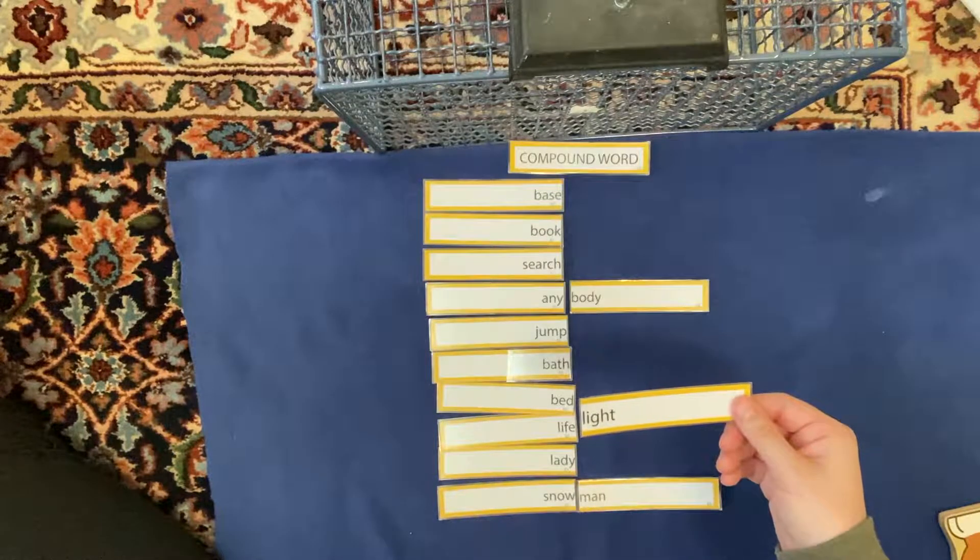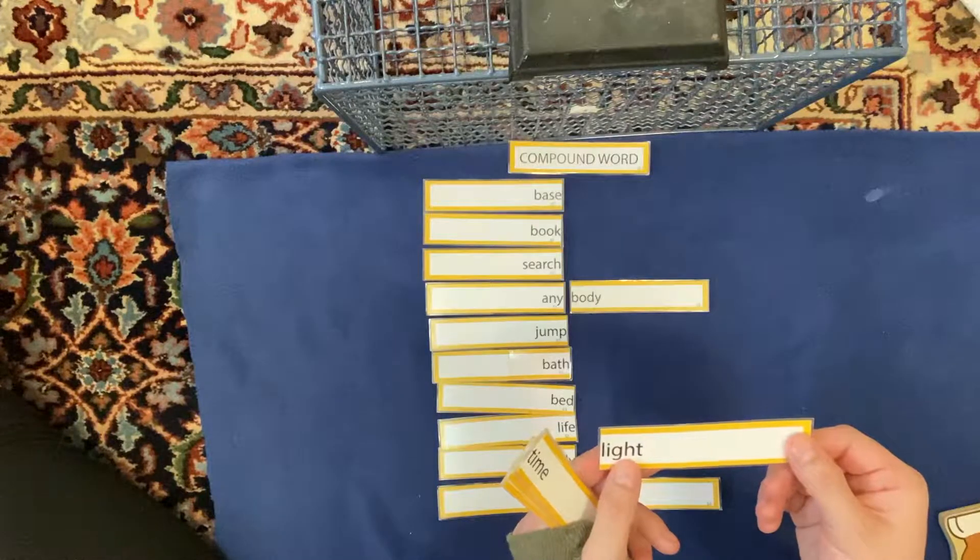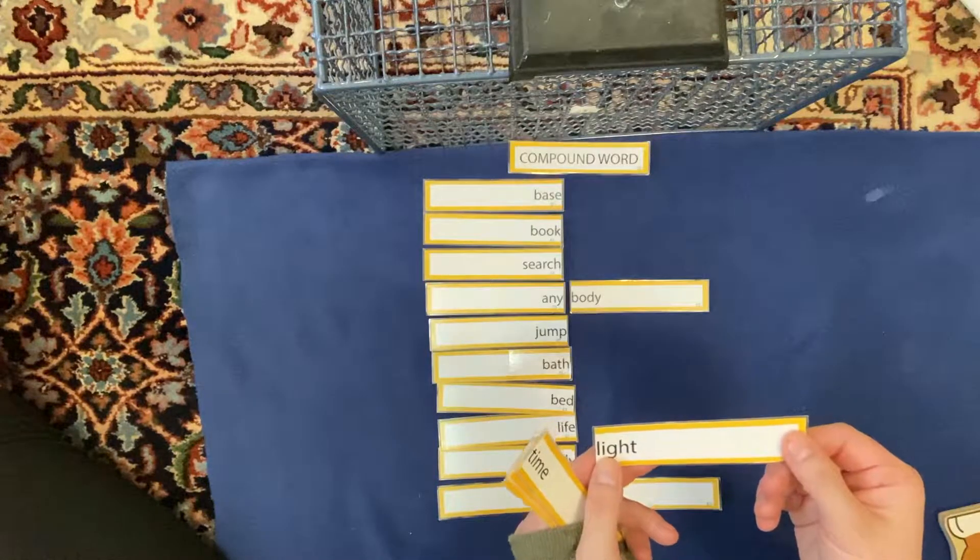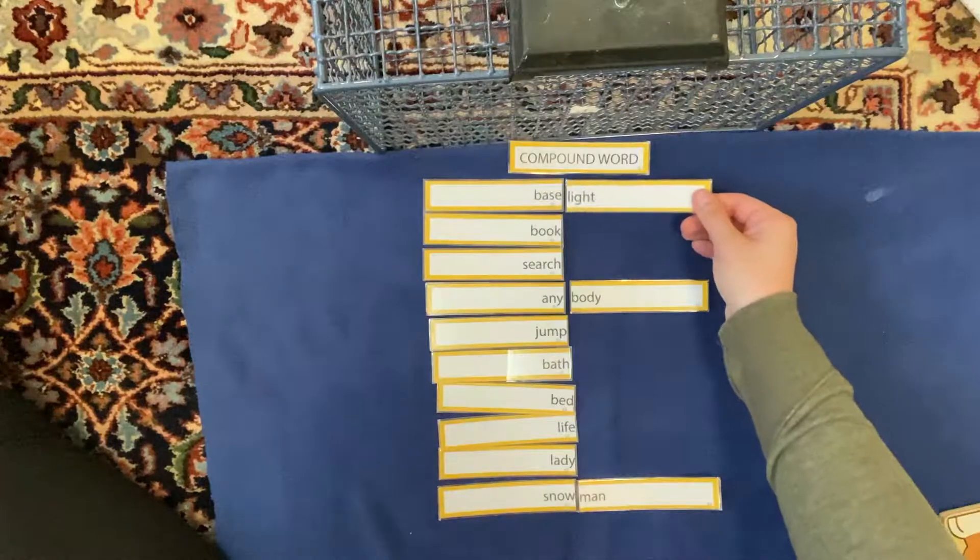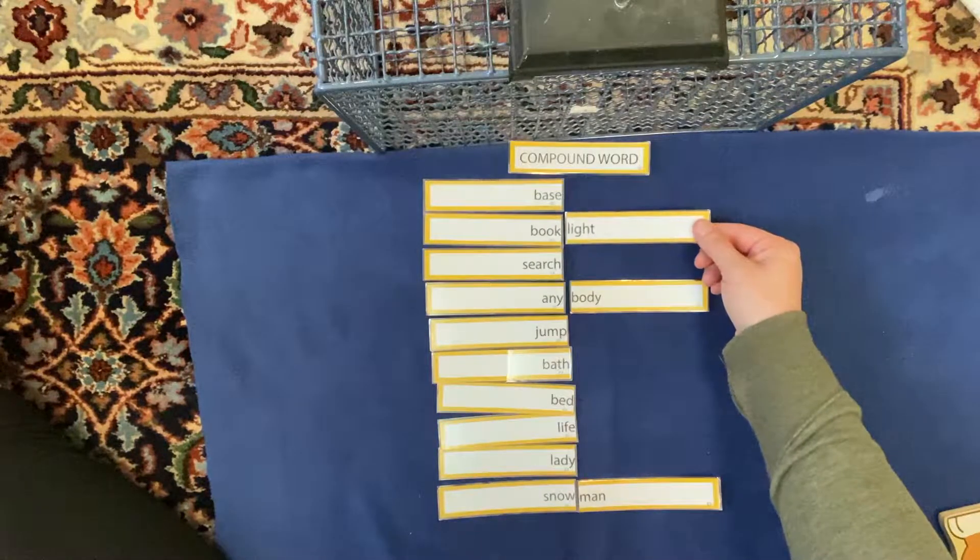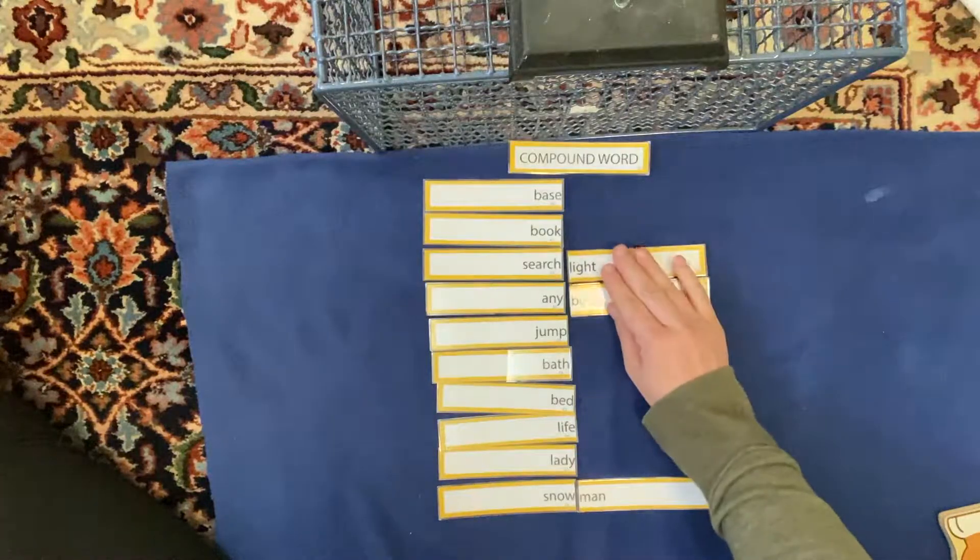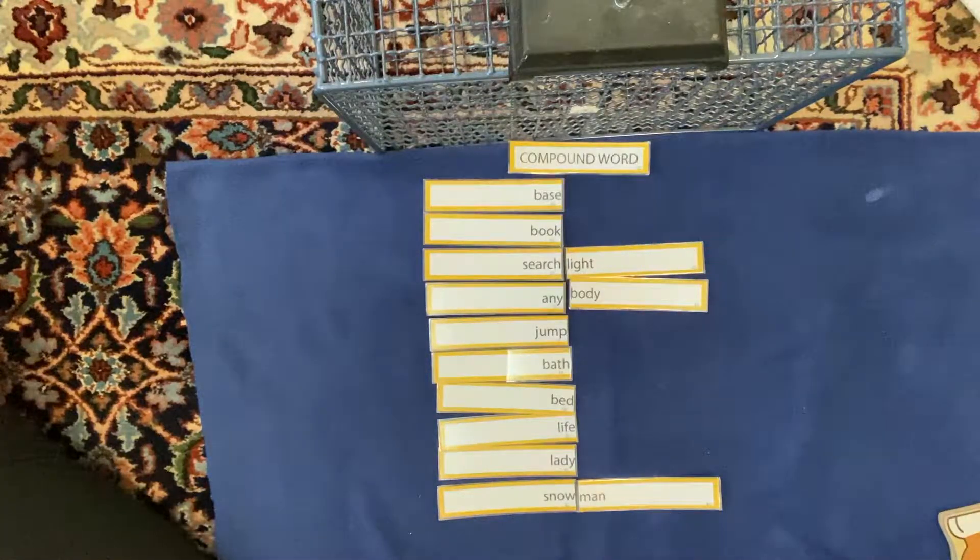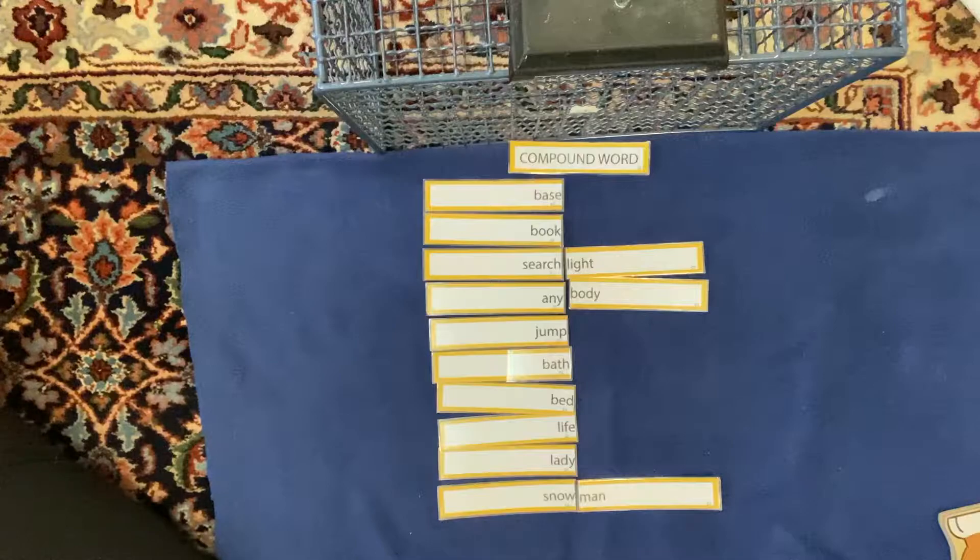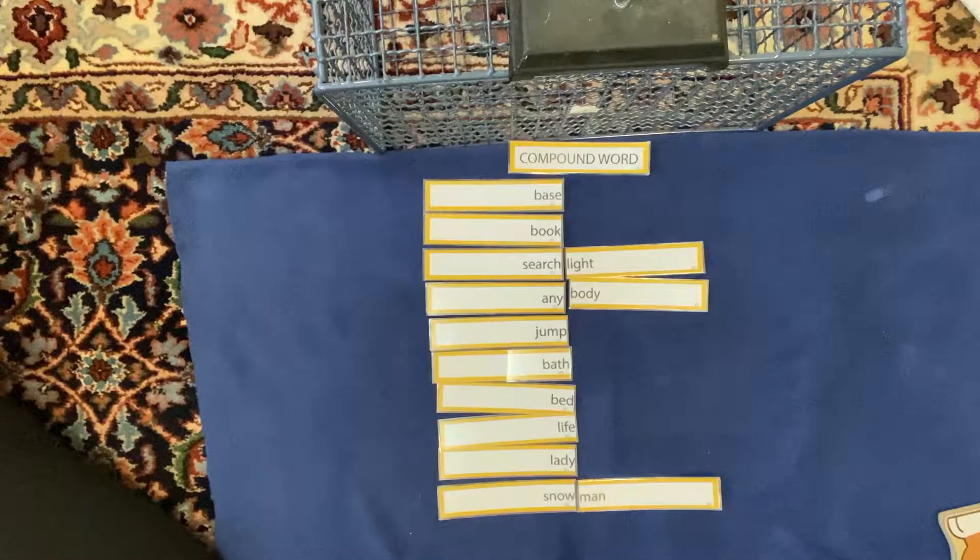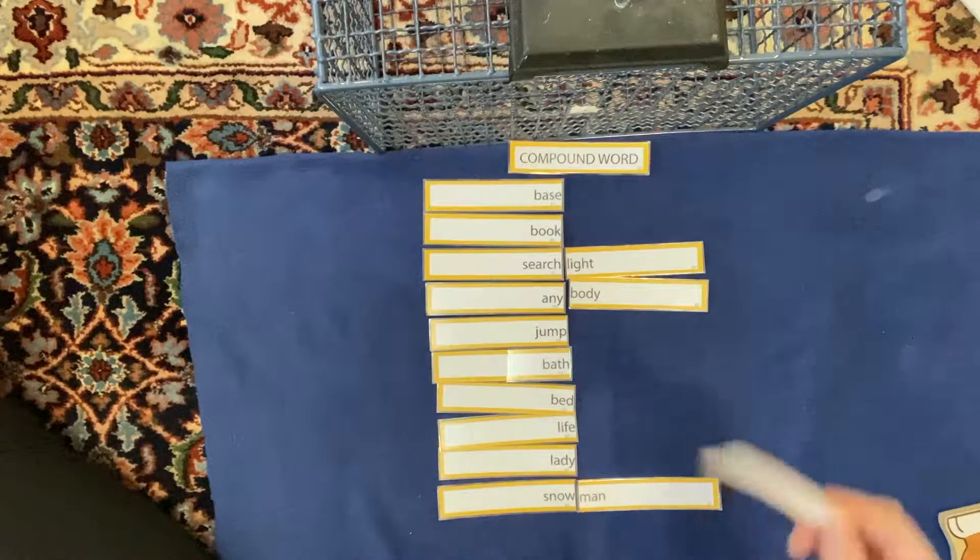Now I have the word light. See, in this word, the G-H are silent and they make the I say its name. So light. Base light. No. Book light. There are book lights. Search light. Have you ever heard of a search light? Search light is just that. It's a big light they use to turn on when it's dark to search for things.